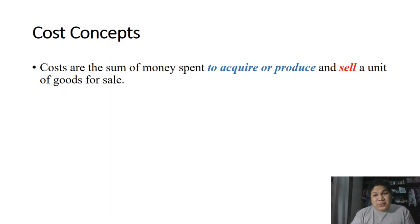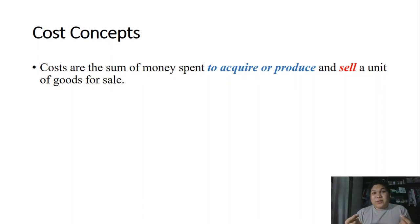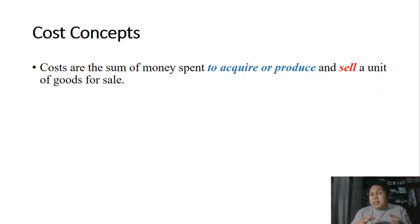Costs are the sum of money spent to acquire, produce, and sell a unit of goods for sale. 'To acquire' applies if you're in a merchandising business where you don't manufacture your own product. 'To produce' applies if you make your own product. So costs cover the total sum spent from the time you acquire these products to the point of selling them.